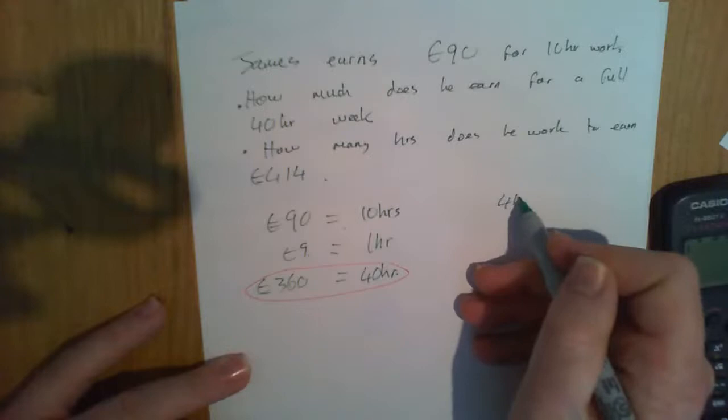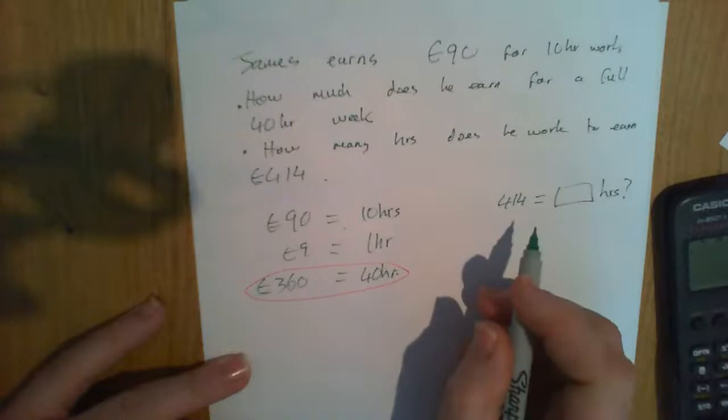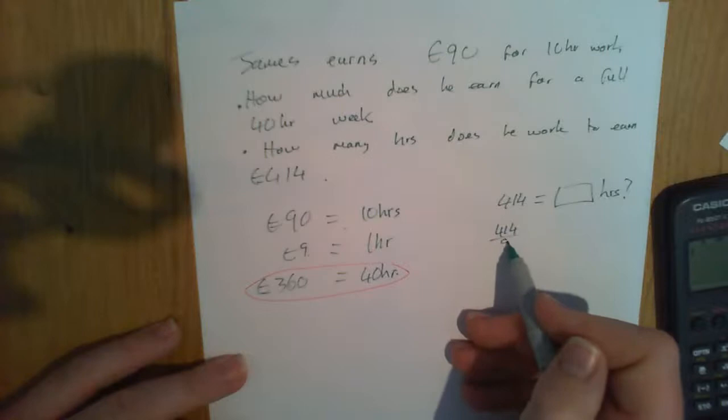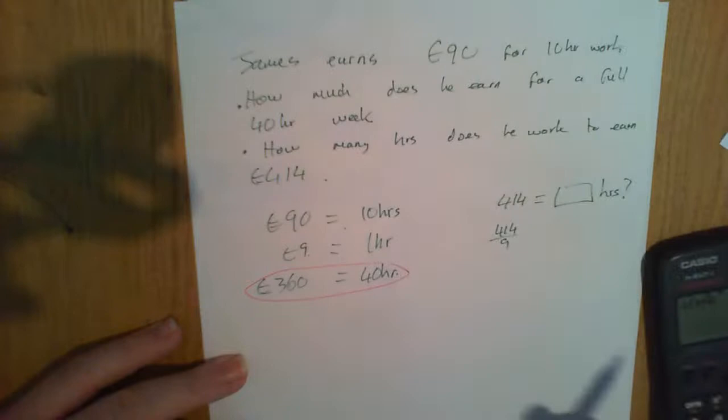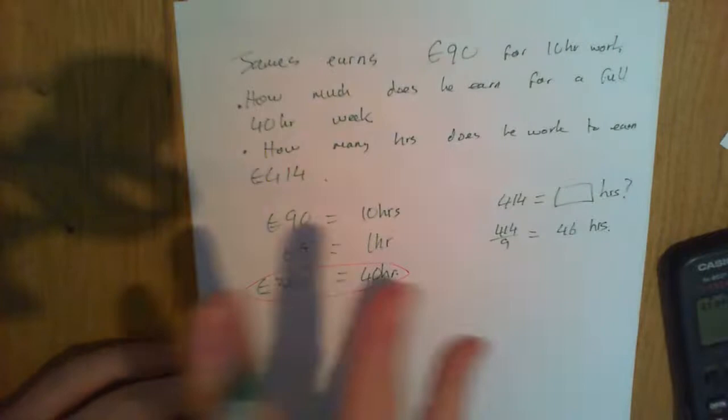414 is equal to how many hours? Well, we know one hour is 9 euro, so that means 414 divided by 9. 46-hour week. Jesus, was doing some overtime or something.